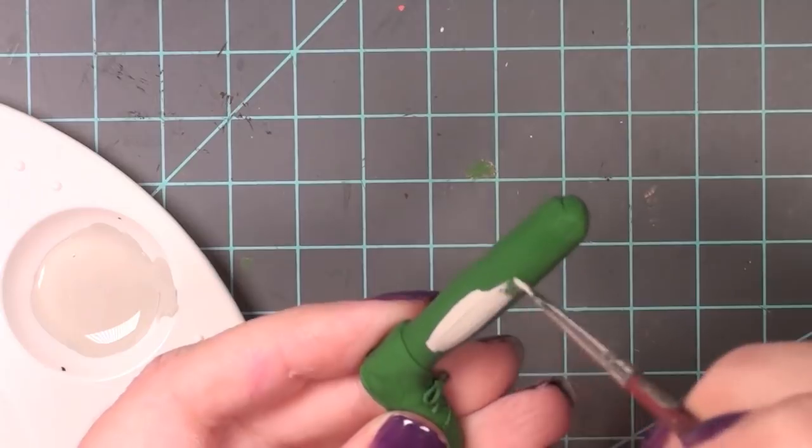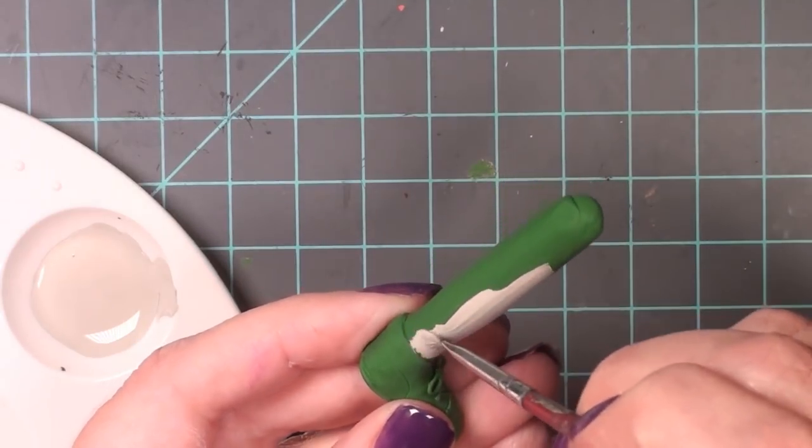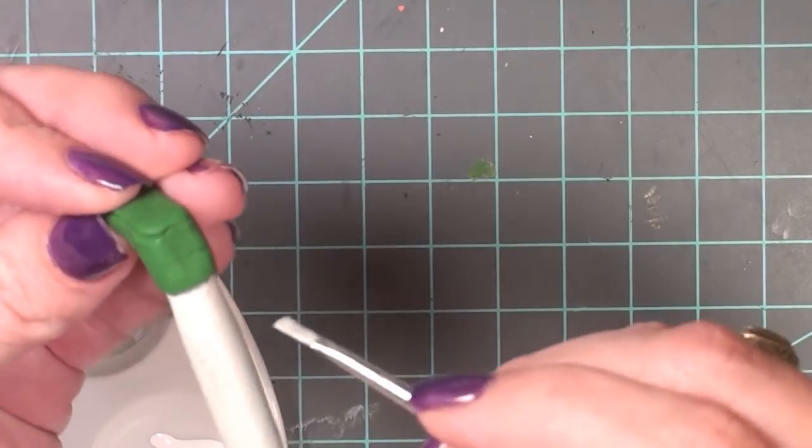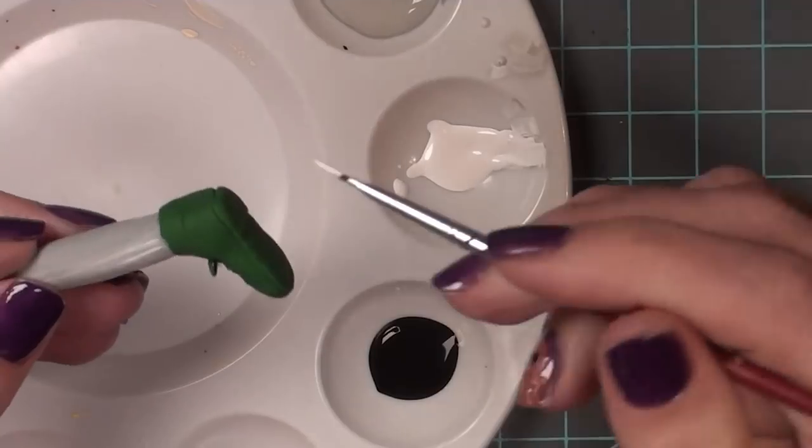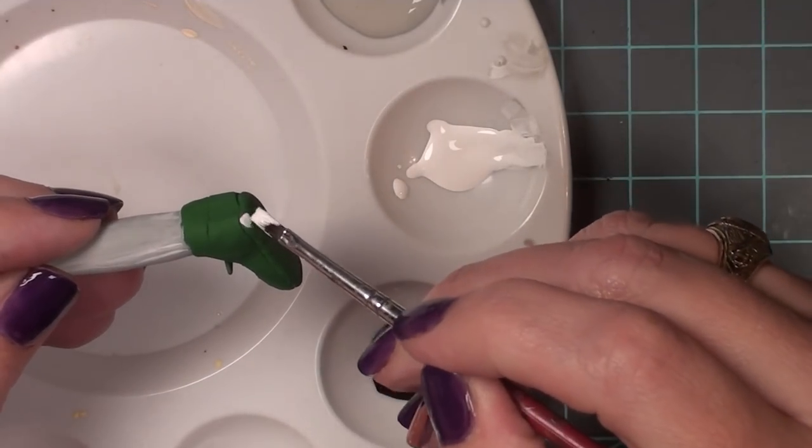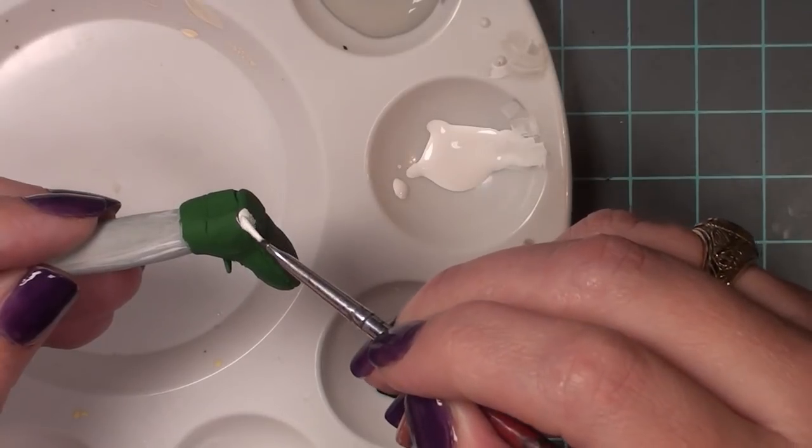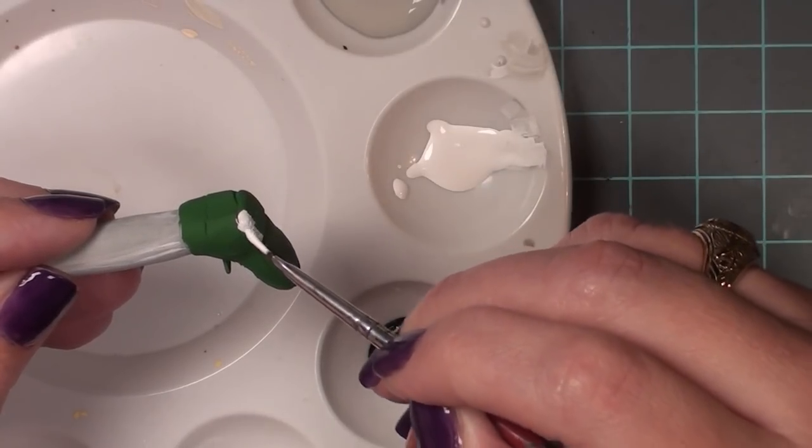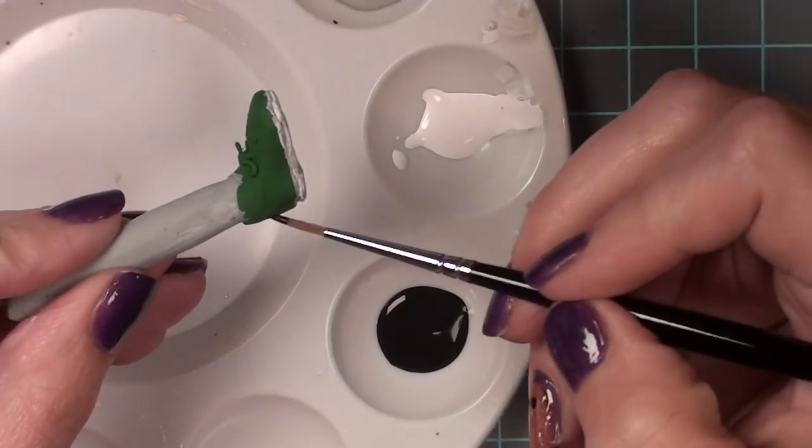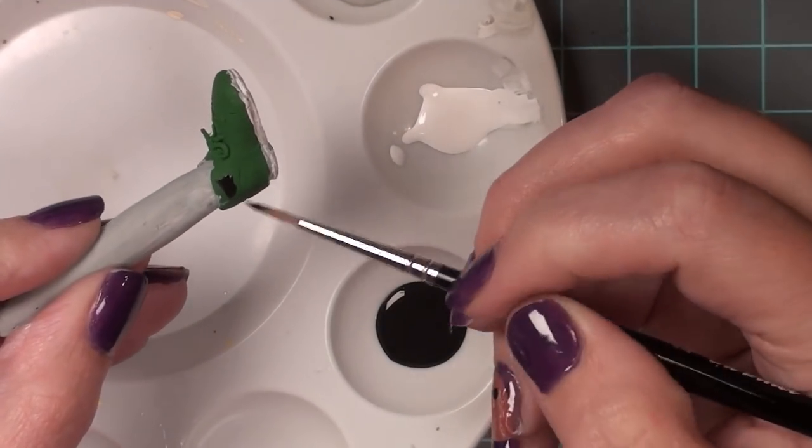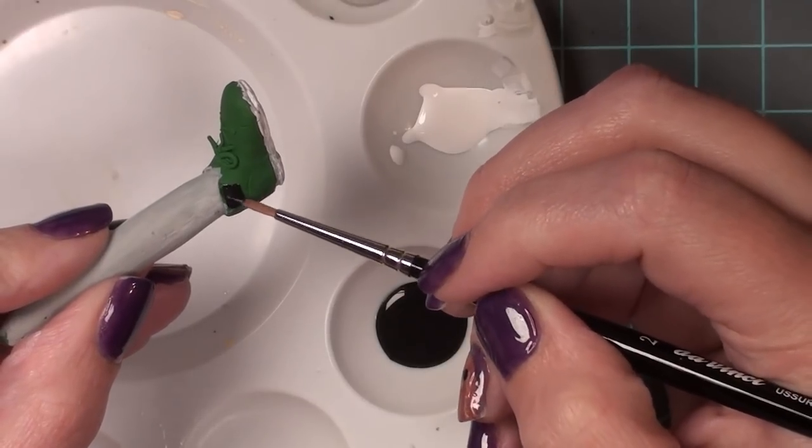After the leg has cooled down from being in the oven, I can go ahead and paint it with acrylic paints. This is actually gray, even though my screen is making it look tan, but I painted the sock gray. Now I'm using a little bit of white on the sole of the shoe. I tried to be as careful as possible, but I knew once I went in with the black I could kind of fix some of my mess-ups.